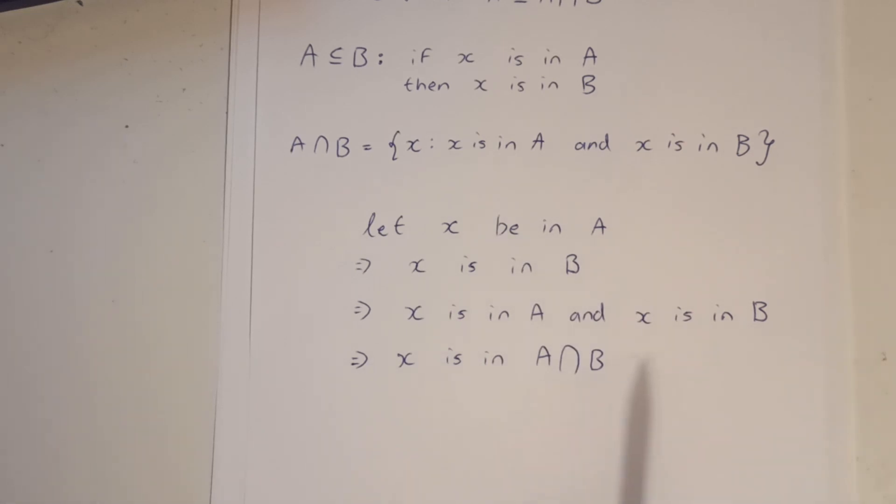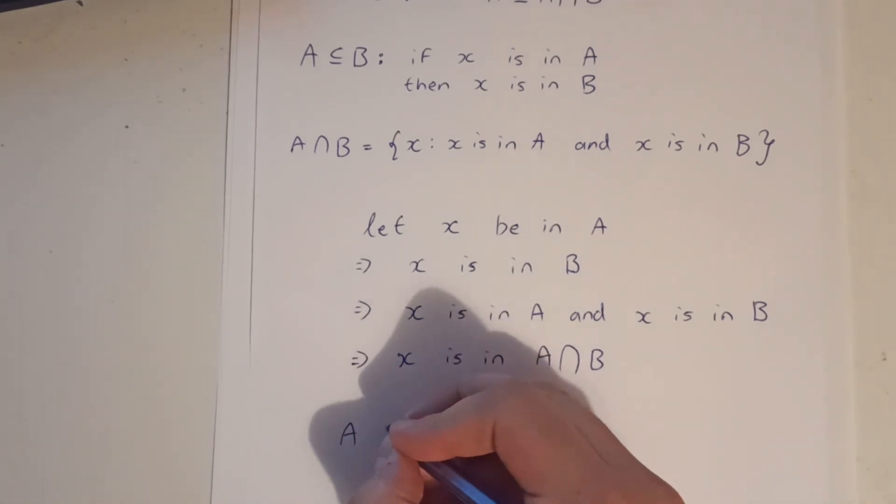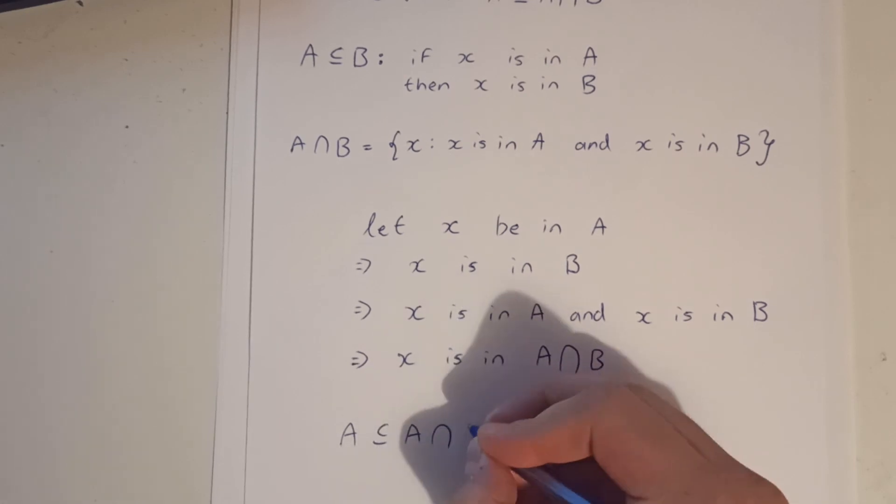So from this, we can say that anything that's in A has the property that it's also in A intersection B, which is the definition of a subset. So A is a subset of A intersection B.